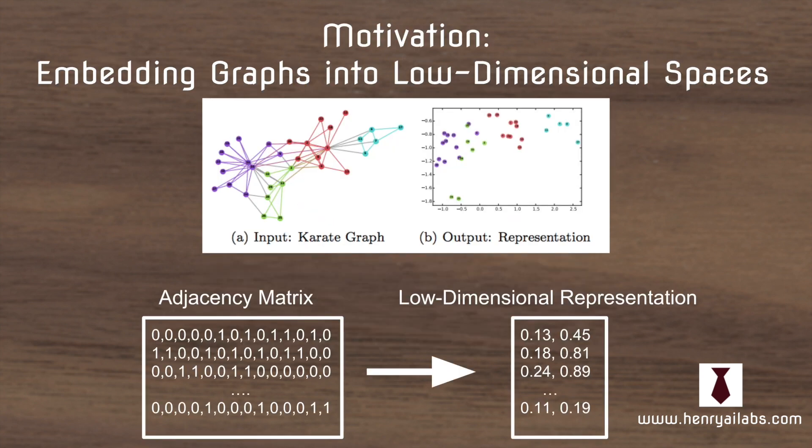The motivation of this idea is to embed graphs which are typically represented as sparse adjacency matrices or lists into low-dimensional continuous vector representations. The picture shows the result of this. You start out with this graph and then you embed it into a space such that you can do things like Euclidean distance clustering.